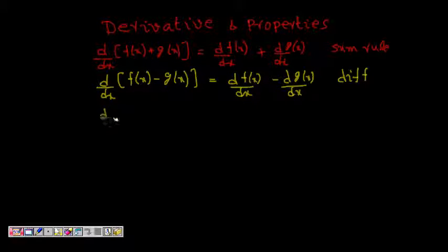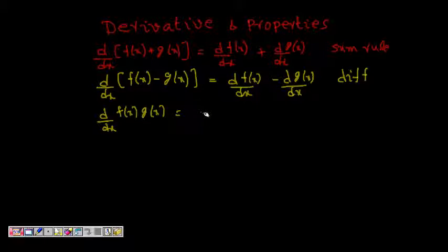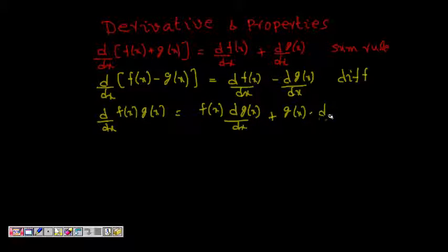Then we have d/dx of f(x) times g(x). What happens if two functions are multiplied? You can still find the derivative. Using the product formula, the differentiation becomes f(x) times dg(x)/dx plus g(x) times df/dx. This is the product rule.